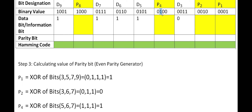For P4, we consider bits having 1 in the third bit position: positions 5, 6, and 7. Their data values are 1, 1, and 1 respectively. XOR-ing these gives three 1s — an odd count — so to make it even parity, P4 = 1.